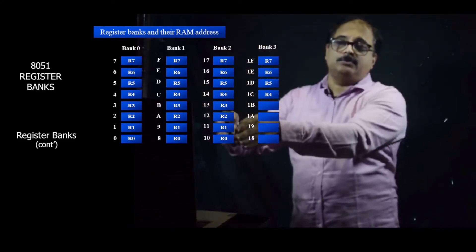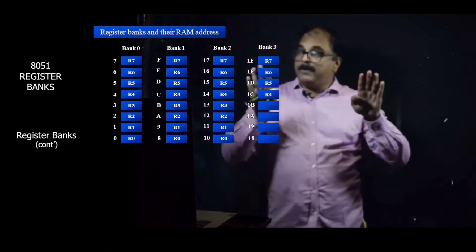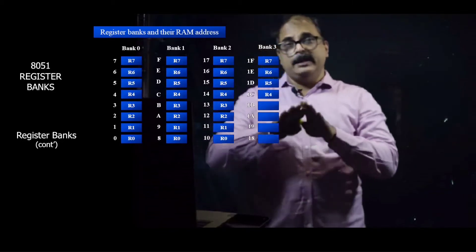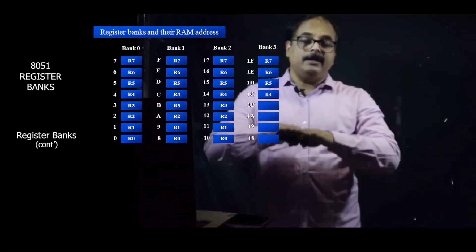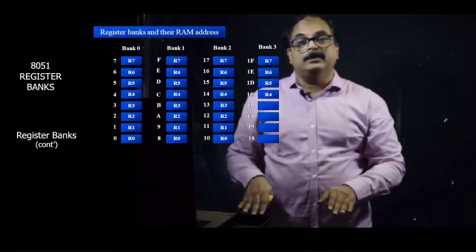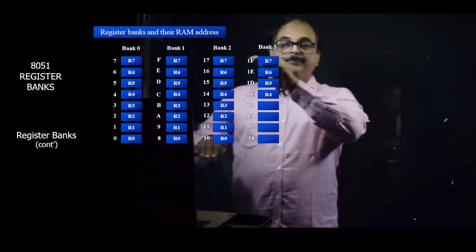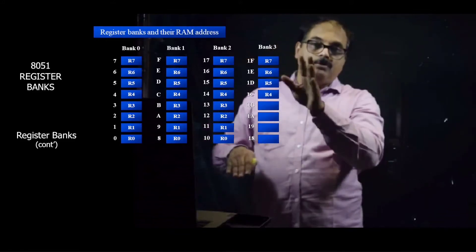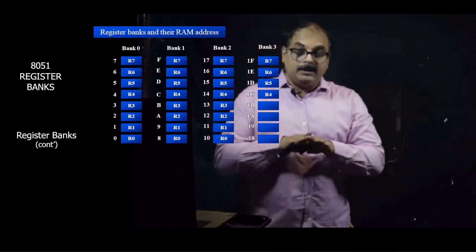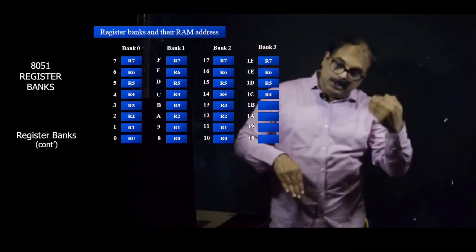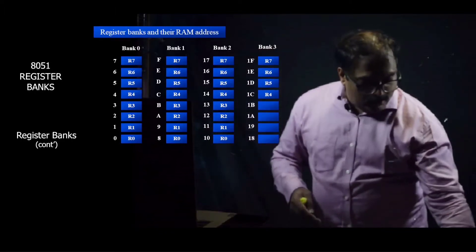Total number of registers are 32 divided into four banks, each bank has got eight registers. The default bank when 8051 is started is register bank 0. That means 00 to 07, these register addresses are the default bank. If you want to change the bank, you can do so. Suppose you don't want register bank 0 and you want to use some other register bank, then that is very much possible.